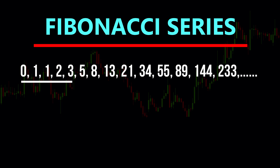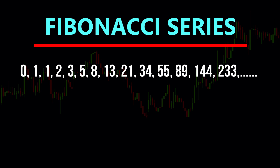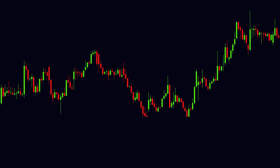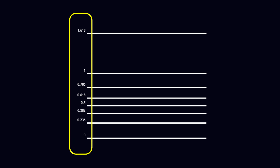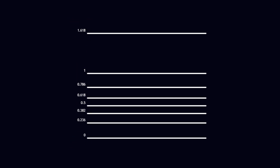Similarly, accepting some numbers, when any number of the series is divided by a number which is two places higher than it, the ratio comes nearly to 0.382, and in percentage form it will be 38.2%. Thus, all these ratios are obtained from various calculations of the Fibonacci Series numbers, and these are used as various levels in the Fibonacci tool.